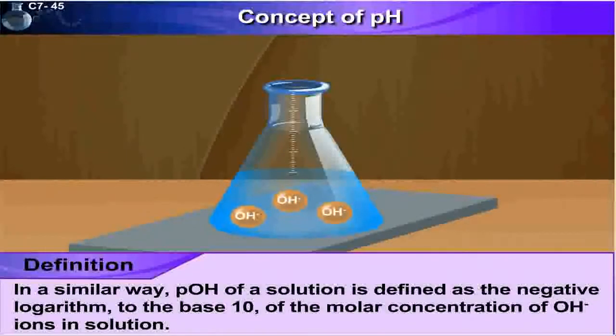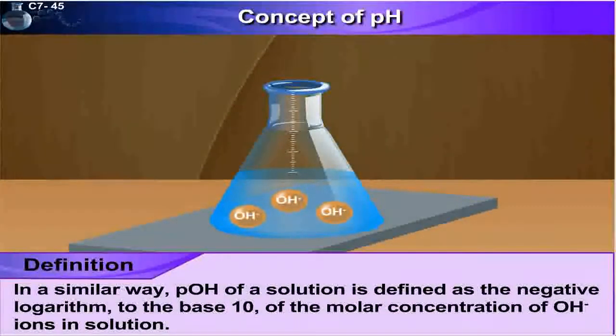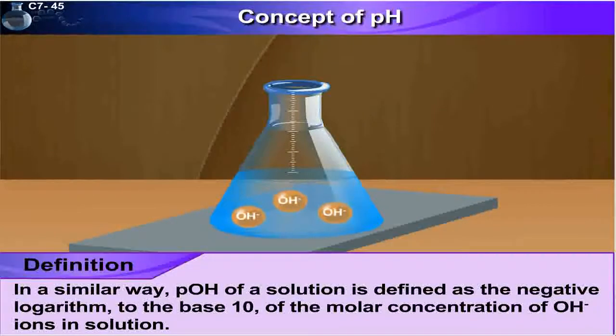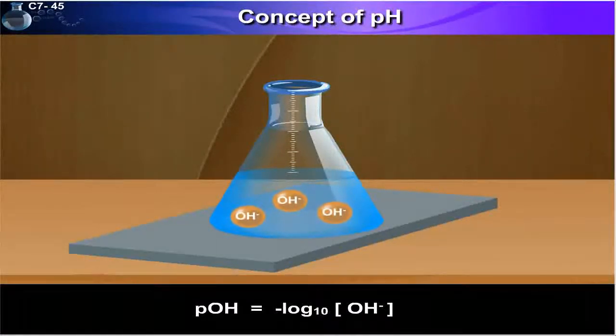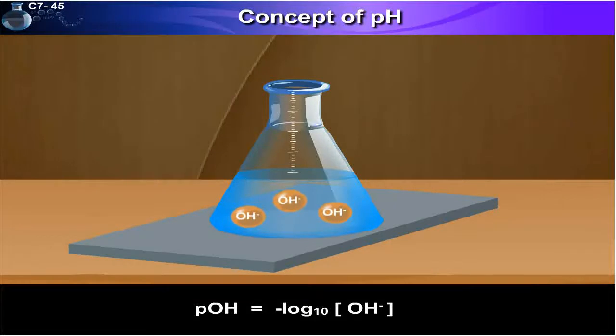In a similar way, pOH of a solution is defined as the negative logarithm to the base 10 of the molar concentration of OH- ions in solution. Thus, pOH equals minus log to the base 10 of molar concentration of OH- ions.